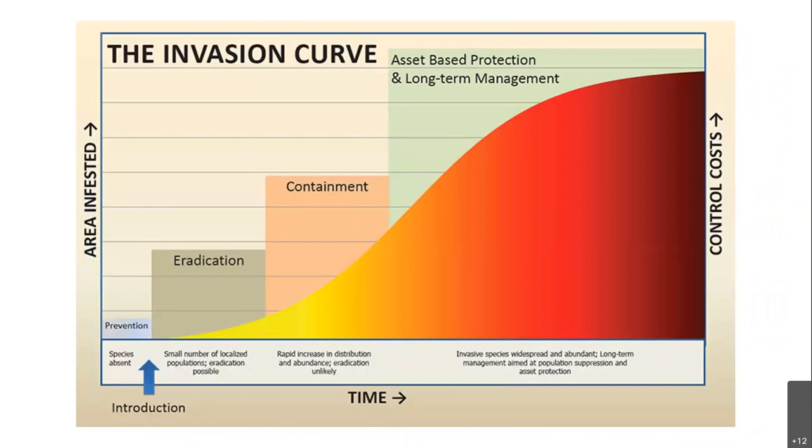Invasive species are a huge problem — what can we do about them? A lot of work has gone into figuring that out, and the main idea is that what we do depends on where the species is on the invasion curve. Early on in the invasion, the invasive species might not even be here yet, or might be present only in small clumps. At that point the focus would be on preventing the invasive species from coming or eradicating it in the small patches where it occurs.